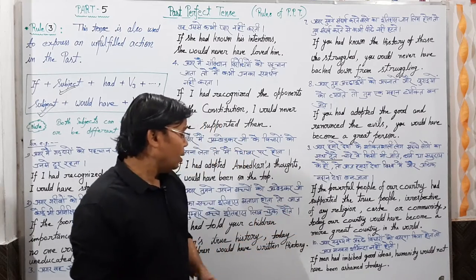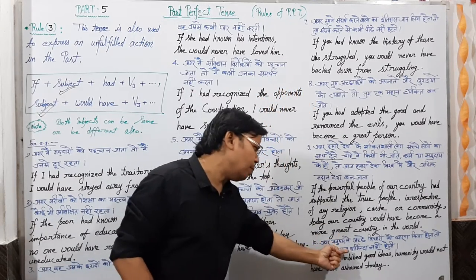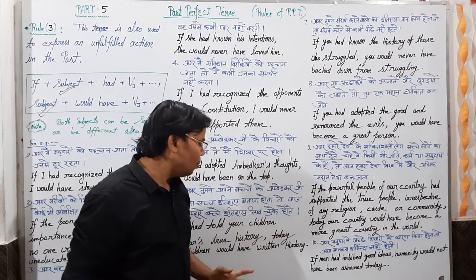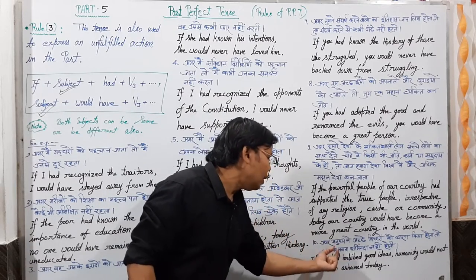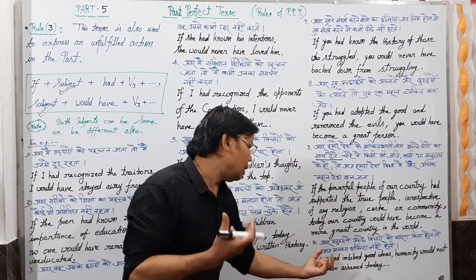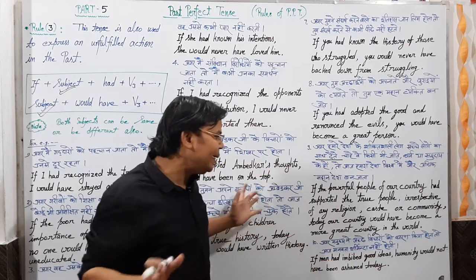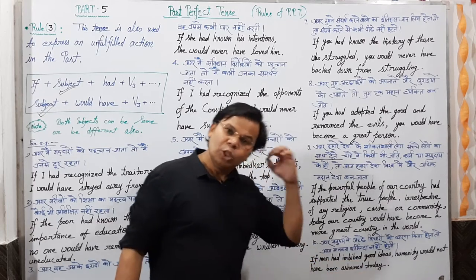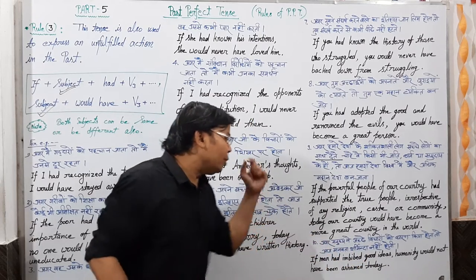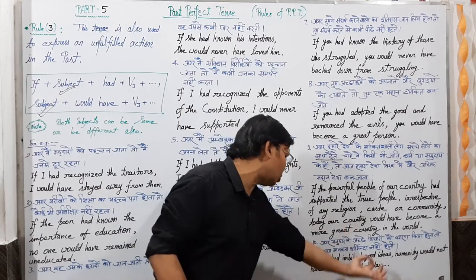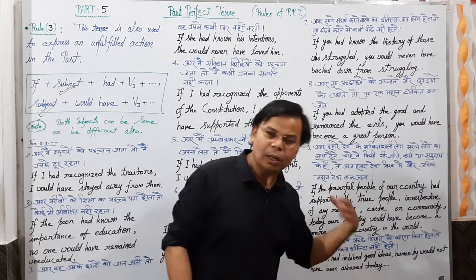Last example: अगर मनुष्य ने अच्छे विचारों को धारण किया होता, तो आज मानवता शर्मिंदा नहीं होती। 'Imbibed' का मतलब है धारण करना। English में: if man had imbibed good ideas, humanity would not have been ashamed today। दूसरे तरीके से: humanity would not have been ashamed today if man had imbibed good ideas।